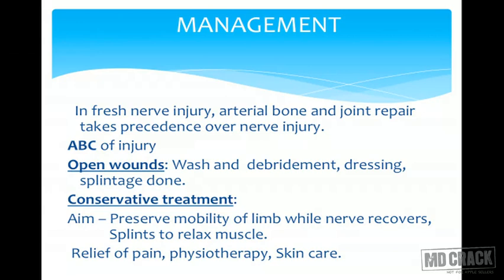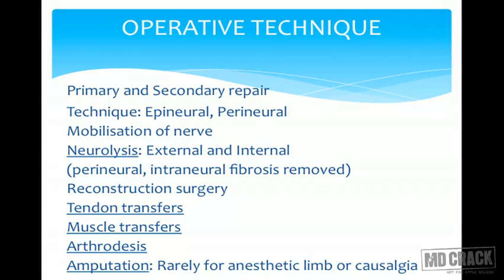Coming to operative treatment of peripheral nerves, primary and secondary repair is done. The commonly used technique is epineural or perineural repair (neurorrhaphy). The epineurium is the outermost layer and the perineurium is below that. Sometimes nerve mobilization or trunk grafting is also done.